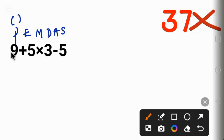E stands for exponent, something like two squared. When we look at the question, it is not there.